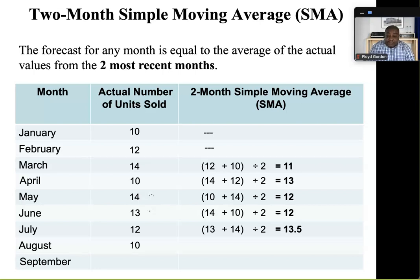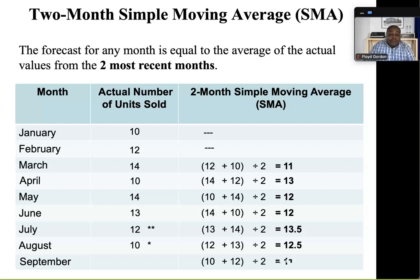Moving on to August — July plus June averaged gives a forecast of 12.5. And then the last month we're forecasting here is September: 10 from August plus 12 from July gives us a forecast of 11 units for September. So this is a two-month simple moving average forecast.